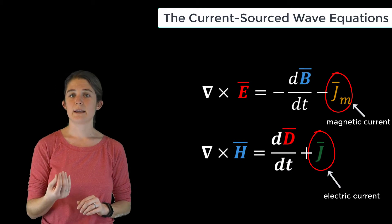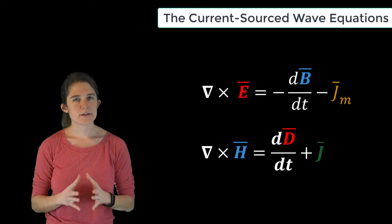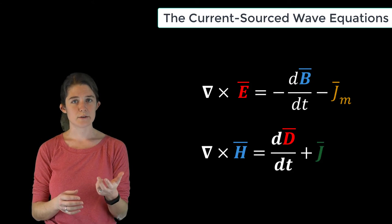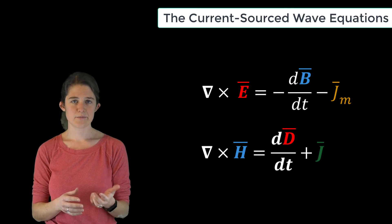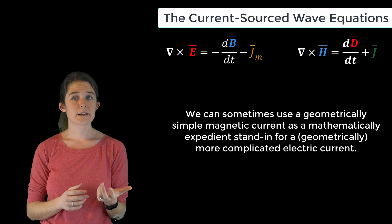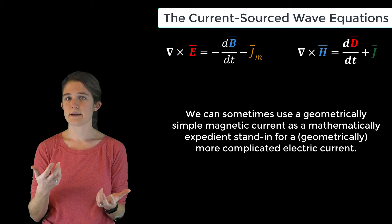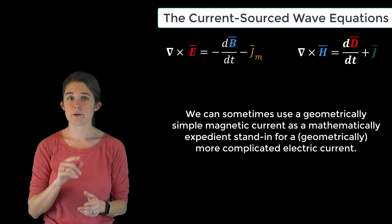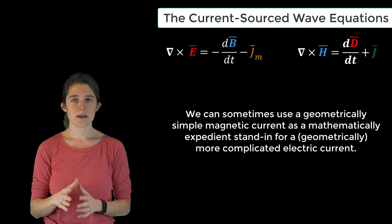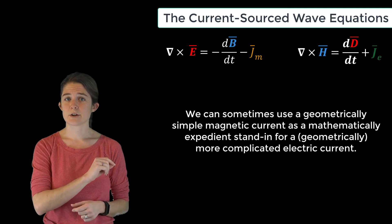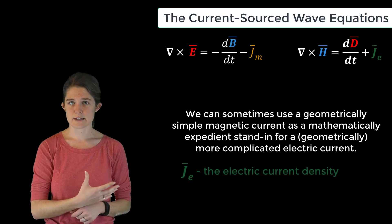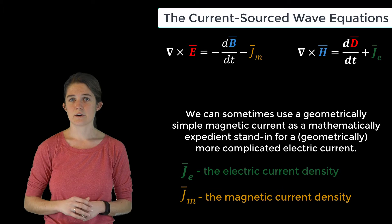We might suppose that if such a thing as magnetic current existed, it might result in a more symmetric set of laws, where we've added a negative j sub m term to Faraday's law for magnetic current. Now it turns out that some configurations of electric current are easier to analyze if we treat them as though they were an equivalent magnetic current. For this reason we're going to keep this j sub m term, and for clarity we will also add the subscript e to the electric current, so j sub e is the electric current density and j sub m is the magnetic current density.